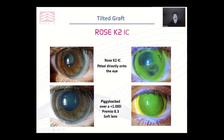This is IC directly onto the eye — you can see it was decentred. We piggybacked it over a plus one disposable lens and got an excellent result. The patient was delighted with the outcome — they couldn't tolerate the lens before, but loved it in this situation.